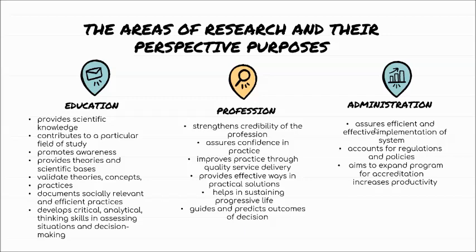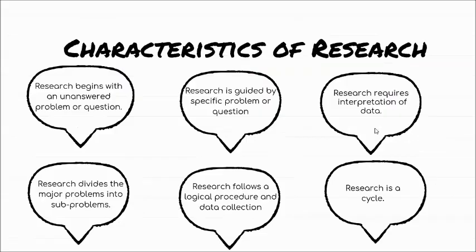In administration, research assures efficient and effective implementation of the system, accounts for regulations and policies, and aims to expand programs for accreditation and increase productivity. Research is part of administration. For example, schools need to present research to improve their systems. We can't just stick to old manual systems — like manual enrollment. Nowadays, schools are shifting to online enrollment, especially during the pandemic when we couldn't go to school. Even payment is now online. These innovations help expand programs and increase productivity.